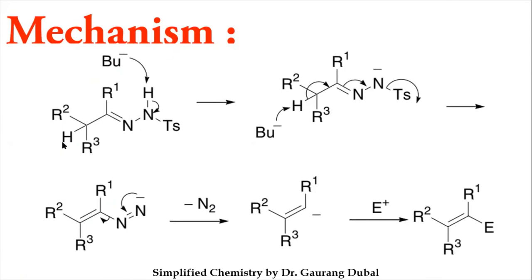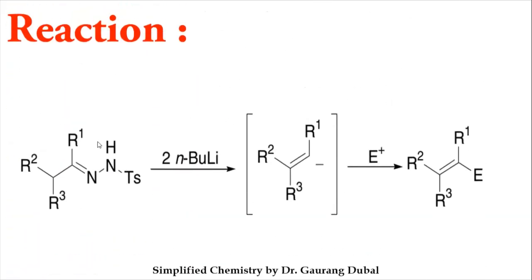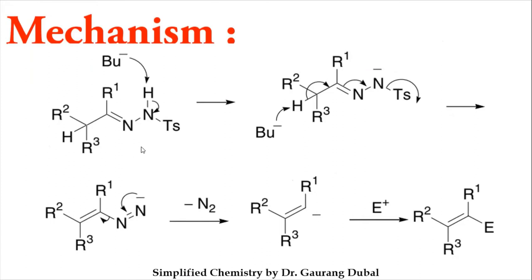For the mechanism: we start with the basic tosylhydrazone structure from the previous slide. Butyl lithium ionizes into Li+ and Bu– (butyl carbanion), because the carbon bonded to lithium is more electronegative and takes the electrons, leaving Li with a positive charge. The butyl carbanion donates its electrons to a hydrogen on nitrogen, which then donates its electron pair to nitrogen — giving nitrogen a negative charge and removing one hydrogen from that position.